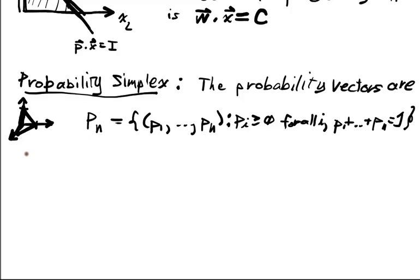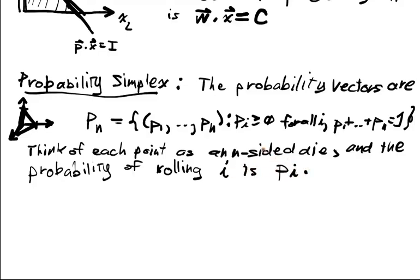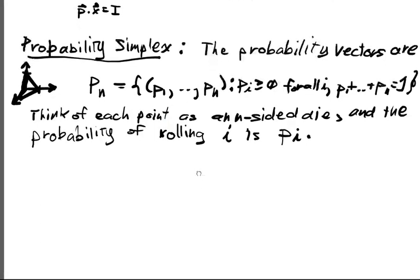And one of the easy ways to think about this space, this probability simplex, is you can think of each point as an n-sided die. And the probability of rolling i, so I'm going to number all the sides, one up to n. So the probability of rolling i is pi. And an n-sided die, well that could be any state of a system. It's just a die is kind of a useful idea. We all know what those are.